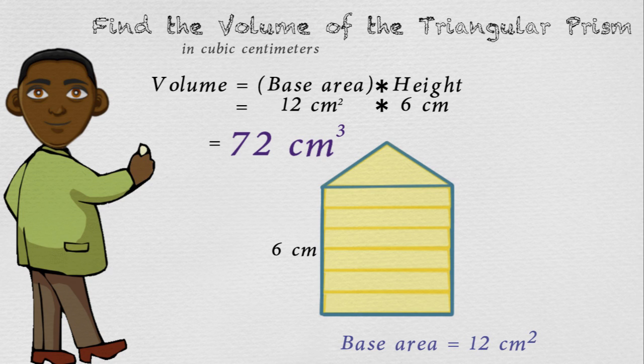And that means there are 72 cubes that are a centimeter in length and width that would be able to fit inside our triangular prism.